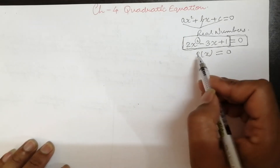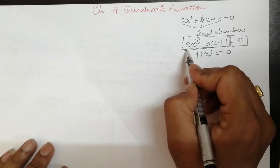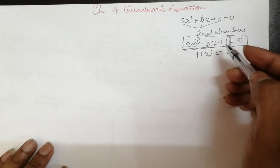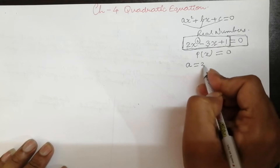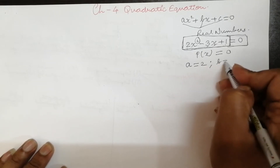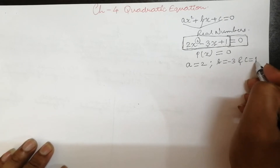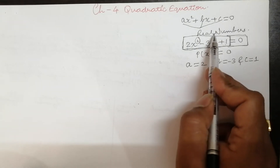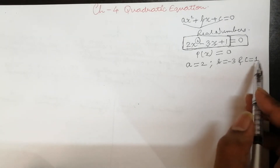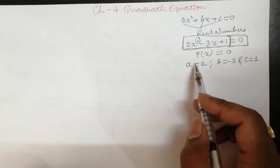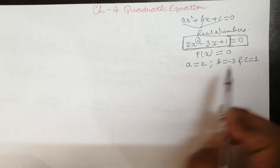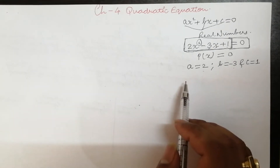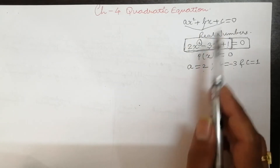This is one example. Here the coefficient of x² is 2, coefficient of x is -3, and the constant term is 1. So if we compare this with the general form, the value of a is 2, value of b is -3, and value of c is 1. So we get the values of a, b and c, and a, b and c are real numbers. All three values are real numbers — rational numbers are also included in real numbers. We got 2, -3 and +1.